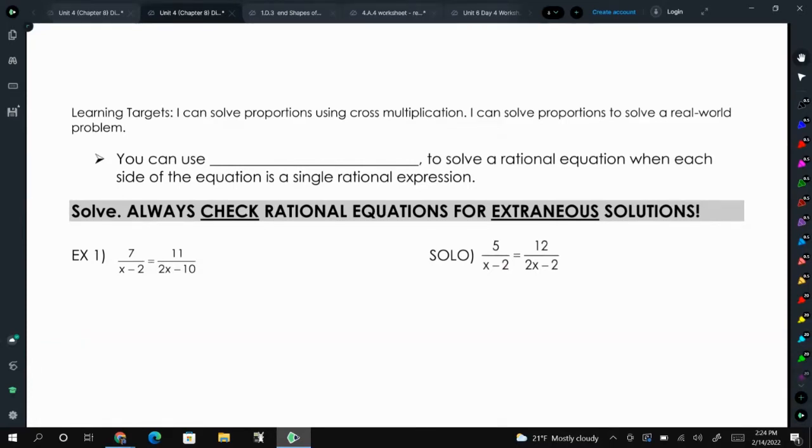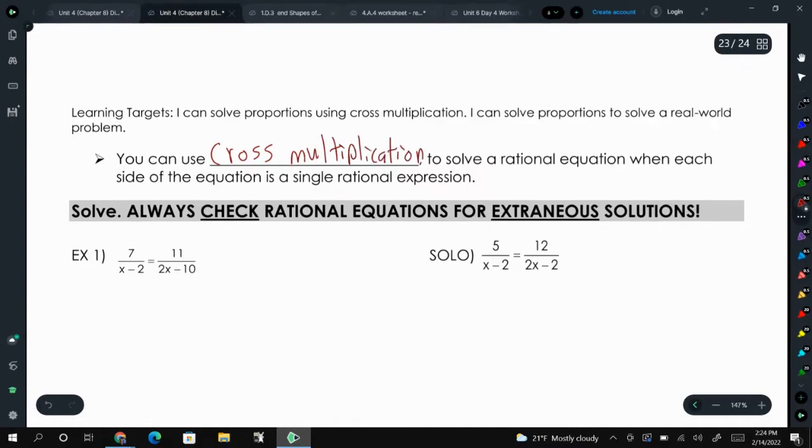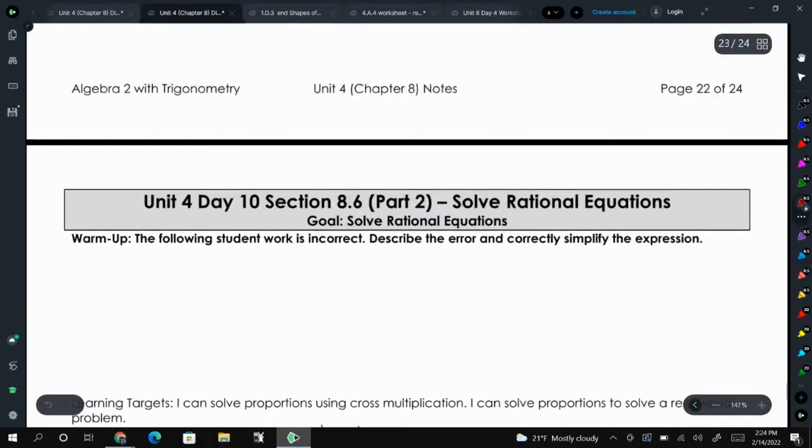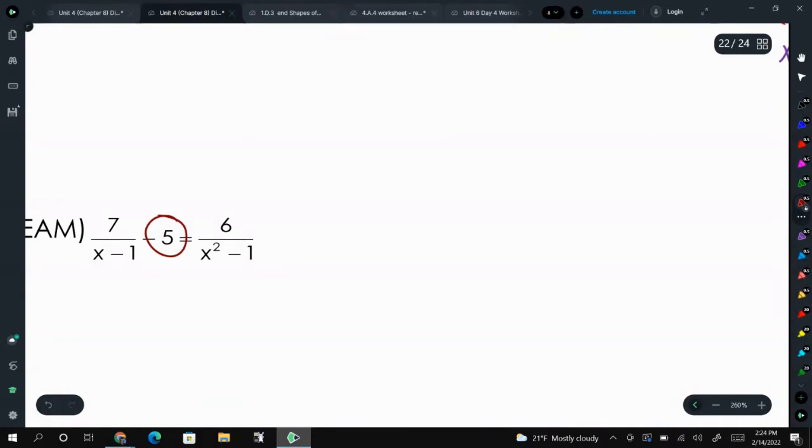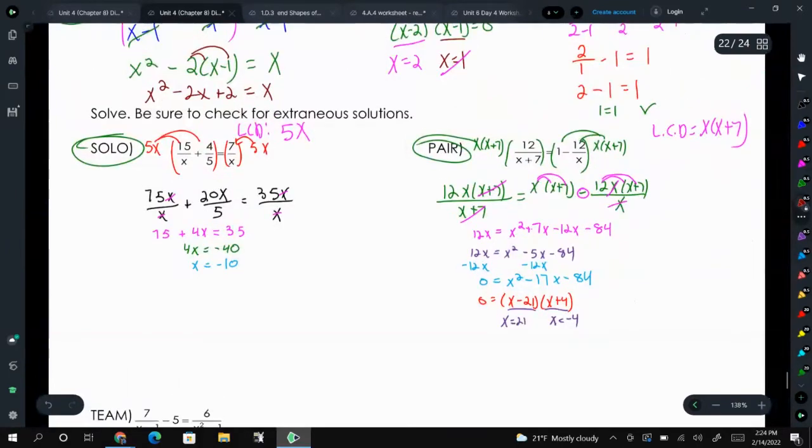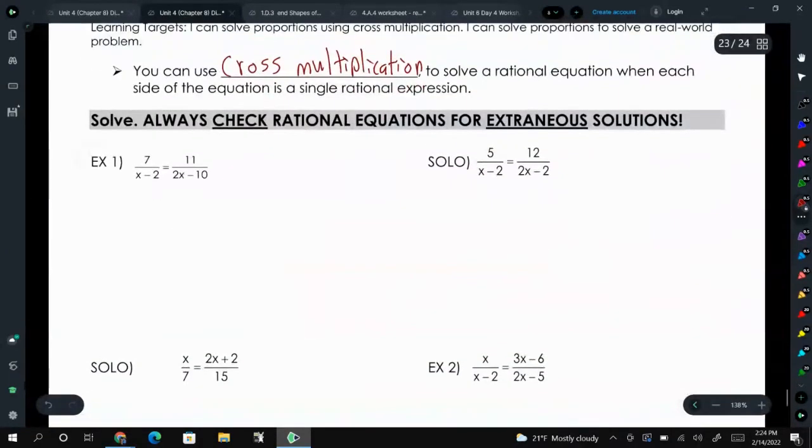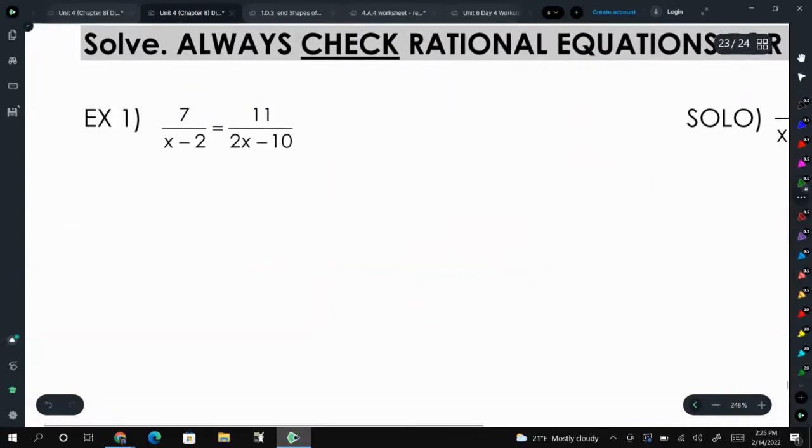So we can use cross-multiplication only when you have a fraction, a single fraction, equal another single fraction. Up here, in these problems, we have this minus 5 right here, so we don't have one single fraction equals another single fraction. If this minus 5 wasn't there, then you could cross-multiply these. But when you just have a fraction equal another fraction, you can cross-multiply.